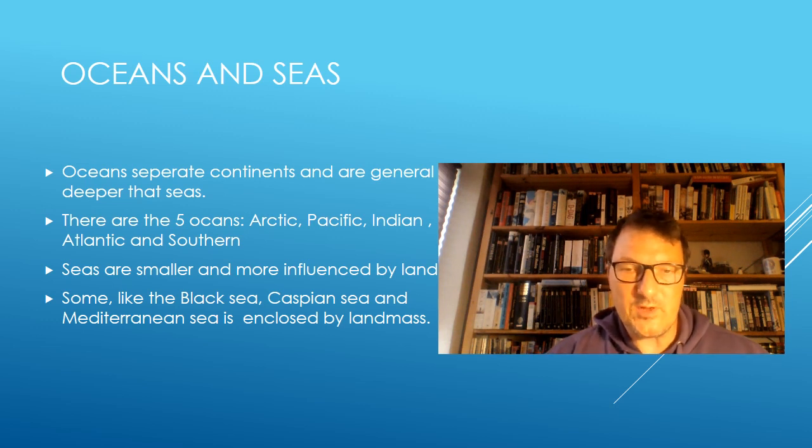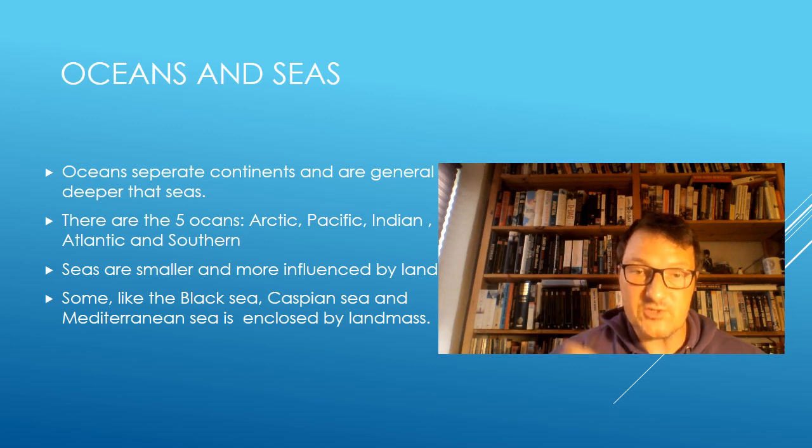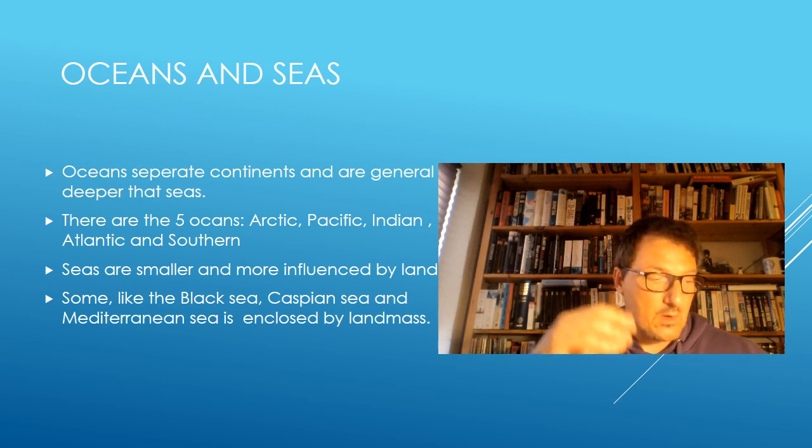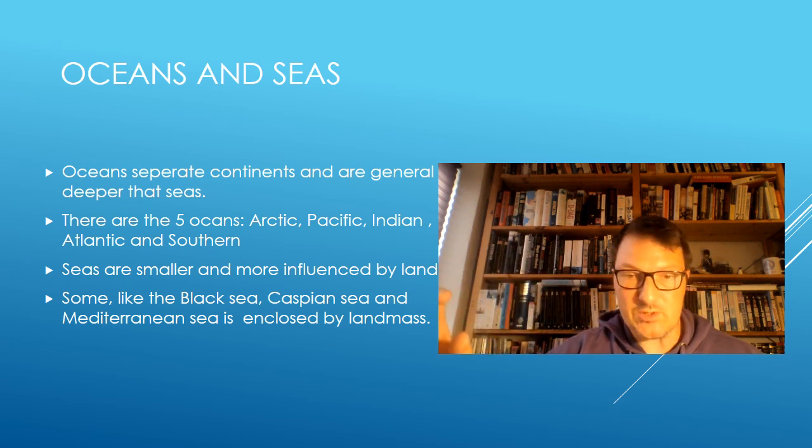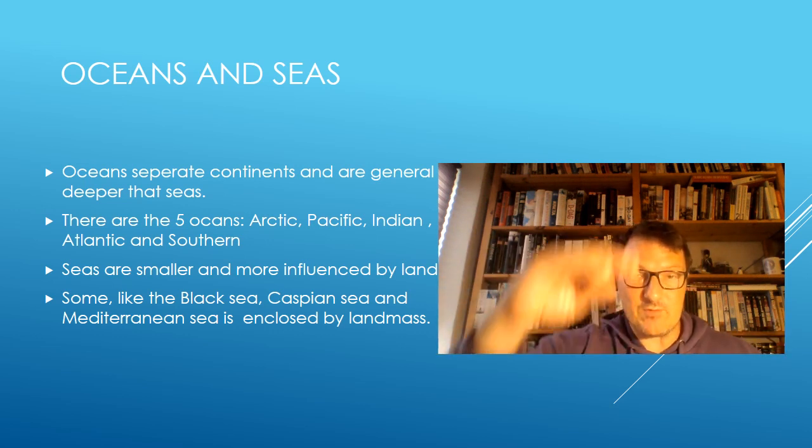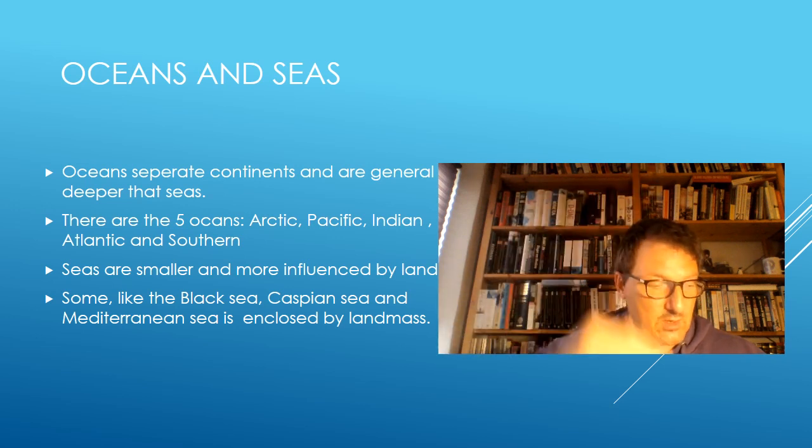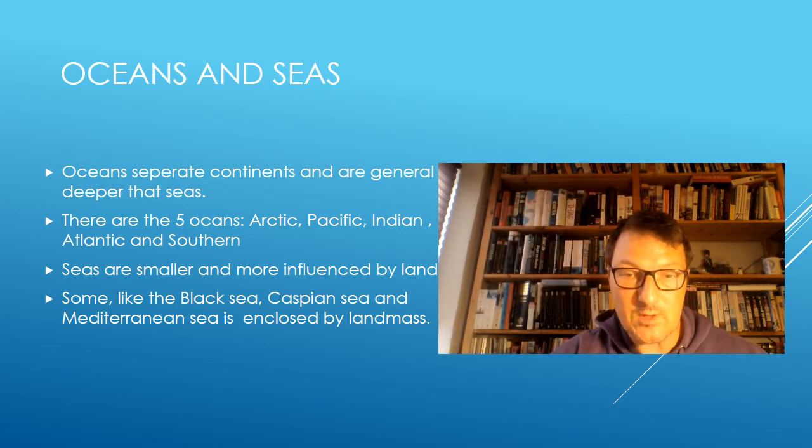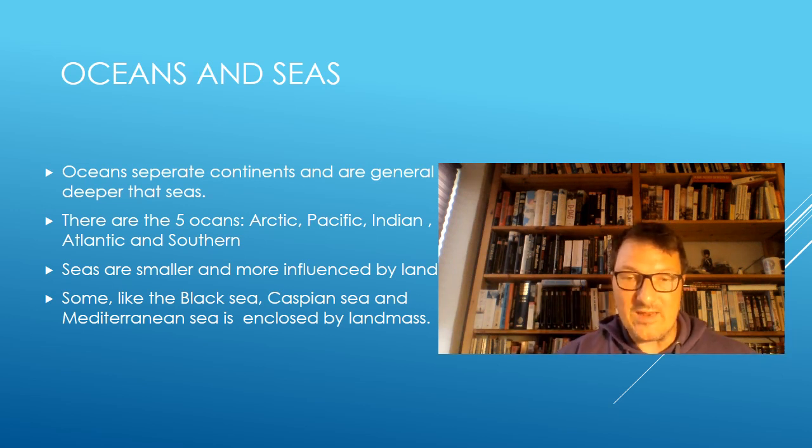So in marine science, we differentiate between oceans and seas. Oceans are the five large segments of water. We have the biggest one, Pacific Ocean. Then we have the Indian Ocean, the Atlantic Ocean. And then we have the northern Arctic Ocean and the entire Southern Ocean. So these are huge bodies of water where the influence from the terrestrial ecosystem is very little, if any.